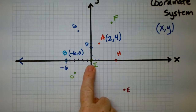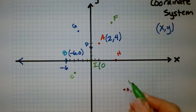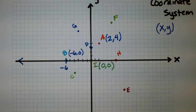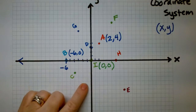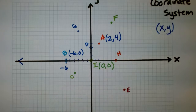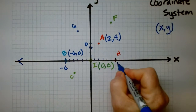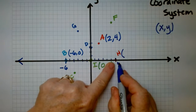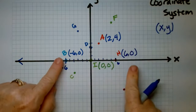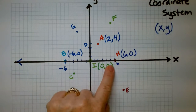Let's try another one. How about H? H is right here — 1, 2, 3, 4, 5, 6 — so it's 6 in x, and it's 0 in y. What are the coordinates of H? It's going to be positive 6 comma 0. Do you see how it's different from B? It's positive, but it didn't get off the x-axis because the y coordinate is 0.